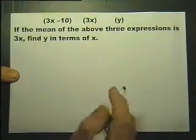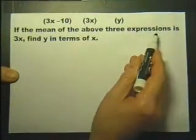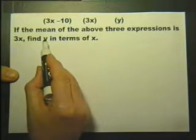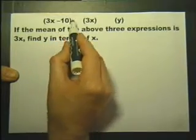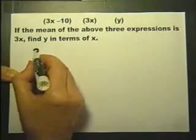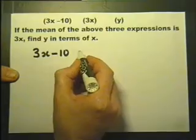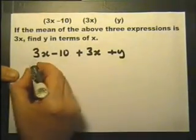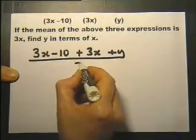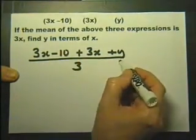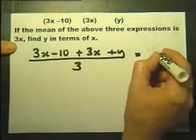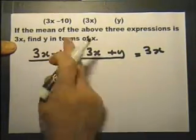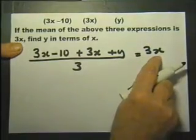We're told that the mean of the above three expressions is 3x. So I've got to find y in terms of x. If the mean of these means if I add them together, so that added to that, added to that, divided by 3, that would work out the mean. And we're told that that comes to 3x. The mean of the three above expressions, that will work out the mean, and it says that it's 3x.